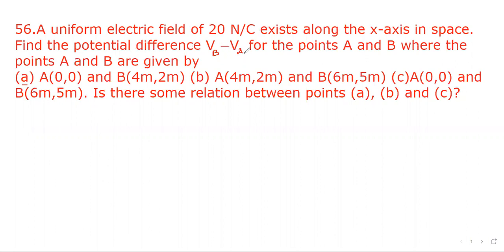Find the potential difference VB minus VA for the points A and B where the points A and B are given by A equal to 0,0 and B equal to 4,2.